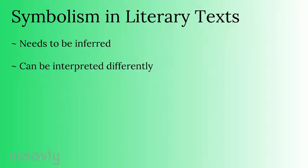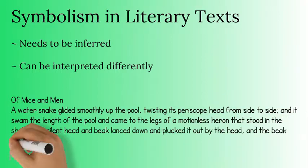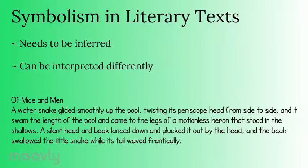I'm going to read a short excerpt from Of Mice and Men. To give you some background, this passage is from the final chapter. In one of the first chapters, novelist John Steinbeck mentions a water snake that glides through a pool with a periscope head — it's just really cruising by. The novel follows two characters, George and Lenny, and their friendship. Here is the passage: "A water snake glided smoothly up the pool, twisting its periscope head from side to side. And it swam the length of the pool and came to the legs of a motionless heron that stood in the shallows. A silent head and beak lanced down and plucked it out by the head and swallowed the little snake while its tail waved frantically."